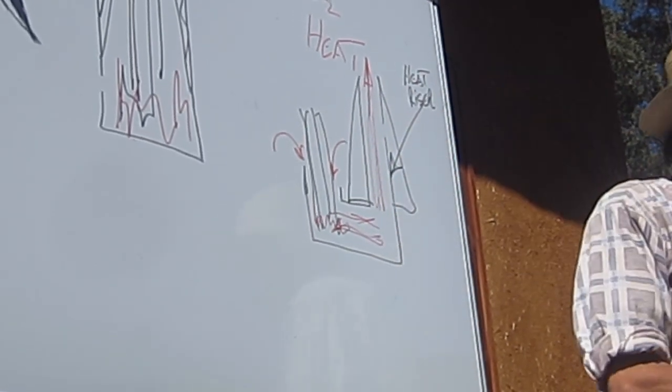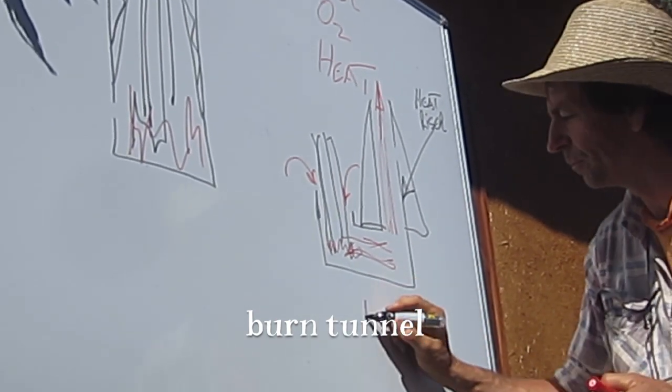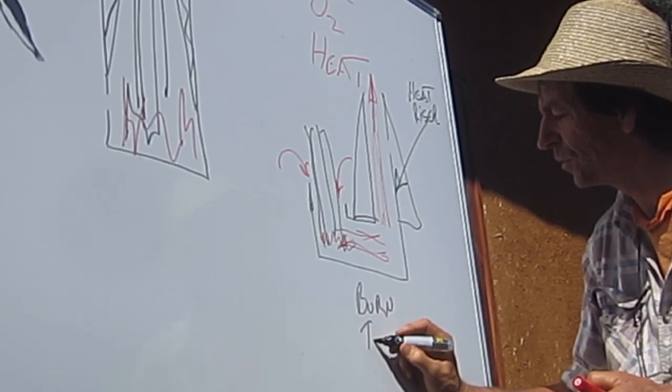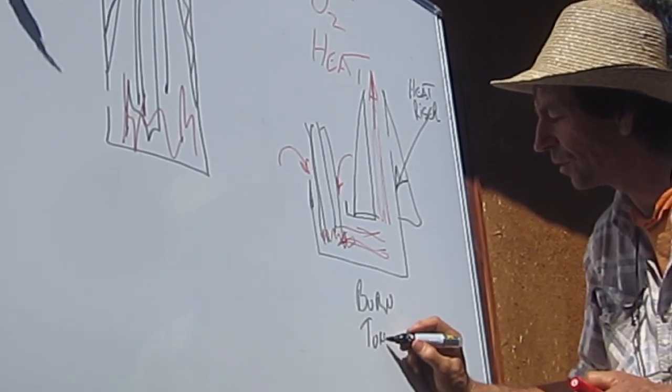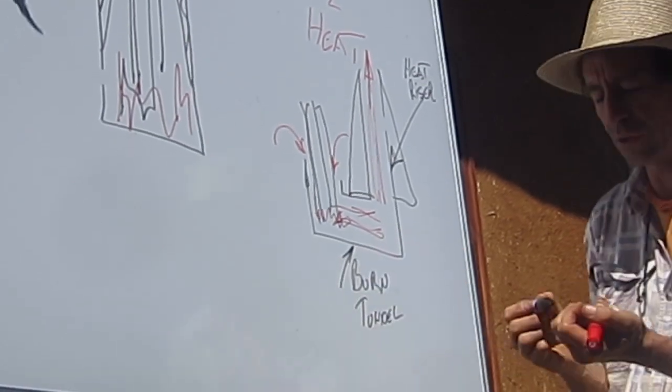This is our burn tunnel - it's this area that runs horizontally. And this area here where we put the fuel in is the feed tube.